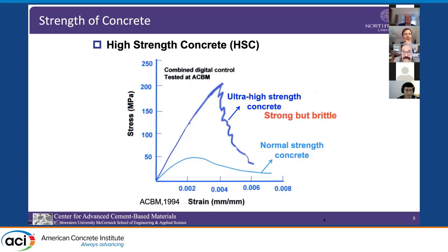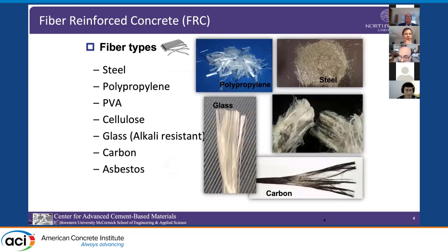That means we cannot use UHPC without fibers if we want some ductility. As far as we know, fibers are currently the only way to increase ductility or toughness, although research is now being done to manipulate materials at the nanostructure level to improve ductility.